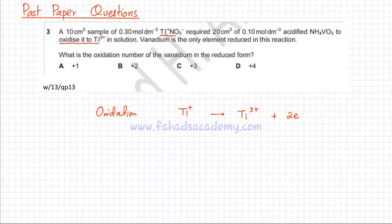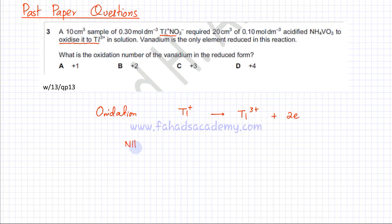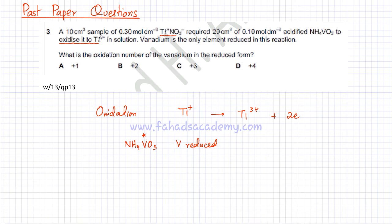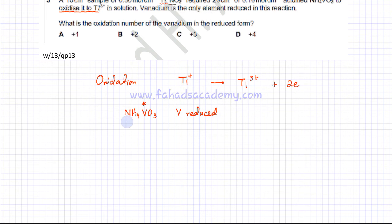If something is getting oxidized, another thing must be getting reduced. If something is losing electrons, then something else must be gaining electrons. The question states that vanadium is the only element that is reduced in this reaction. Vanadium was initially in the form of NH₄VO₃, and the question says vanadium is the only element that has been reduced — so V is gaining electrons. We need to figure out how it's gaining electrons.